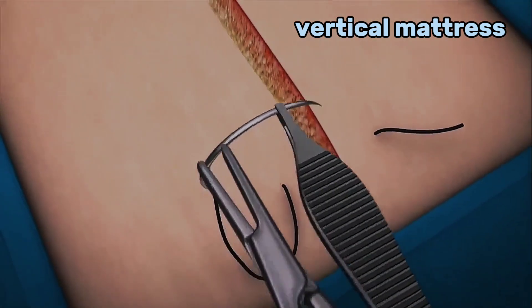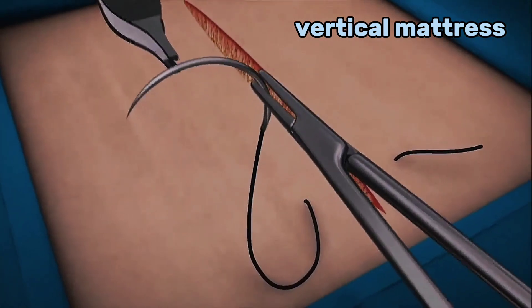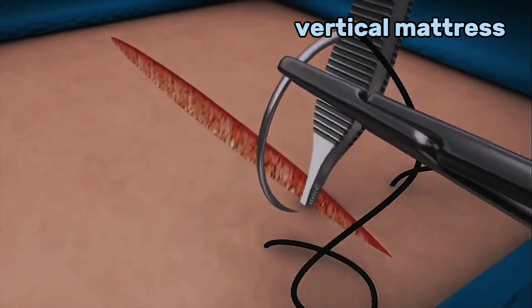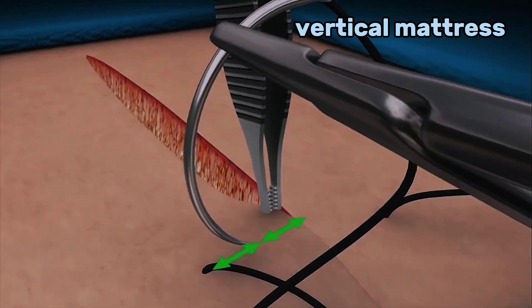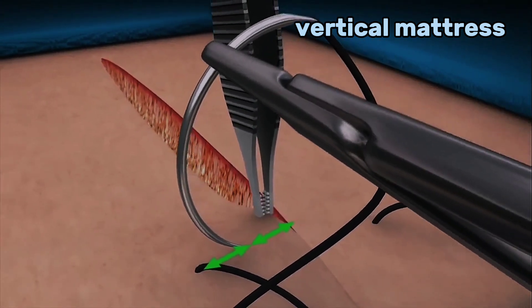Hold the needle with the forceps and rotate it in the needle holder to prepare for the backhand part of the mattress suture. Now take a small bite approximately halfway between the exit point and the skin edge.